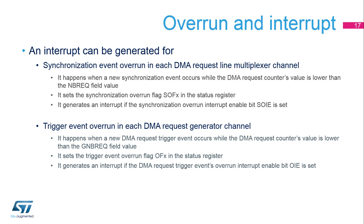If a new DMA request trigger event occurs while the DMA request counter's value is lower than the GNB-REQ field value, the trigger event overrun flag OFX is set in the status register DMA-MUX-RGSR. The overrun flag OFX is reset by setting the associated clear bit COF-X in the DMA-MUX-RGCFR register. Setting the DMA request trigger overrun flag generates an interrupt if the DMA request trigger event overrun interrupt enable bit OIE is set in the control register of the corresponding generator channel.